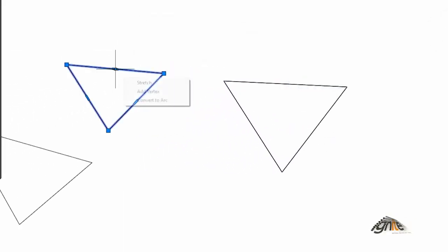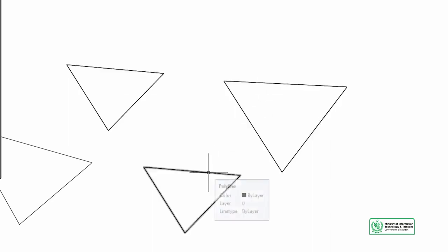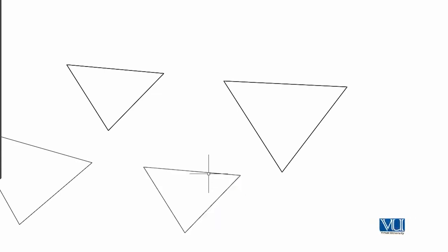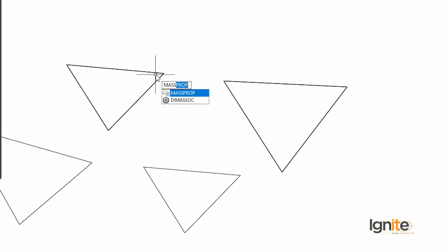Suppose we have to work on 3 objects and we need to know the cumulative area. We need to find the command which calculates cumulative area — that is Mass Properties, M-A-S-S. Note that this is 'Mass Properties'. If you want to find out the cumulative properties of different objects, you will use the MASSPROP command. Press Enter.